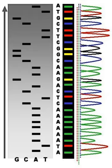Applied Biosystems SOLiD technology employs sequencing by ligation. Here, a pool of all possible oligonucleotides of a fixed length are labeled according to the sequenced position. Oligonucleotides are annealed and ligated. The preferential ligation by DNA ligase for matching sequences results in a signal informative of the nucleotide at that position. Before sequencing, the DNA is amplified by emulsion PCR. The resulting beads, each containing single copies of the same DNA molecule, are deposited on a glass slide. The result is sequences of quantities and lengths comparable to Illumina sequencing. This sequencing by ligation method has been reported to have some issues sequencing palindromic sequences.